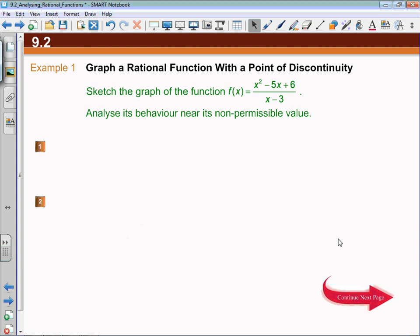Example one: we're going to analyze this function, and it is a rational function because there is that polynomial in the denominator. Right off the bat, many students will immediately say x minus three is in the denominator, so my non-permissible value is that x cannot be equal to positive three, and that's very valid.